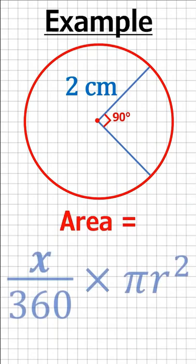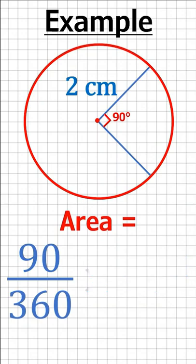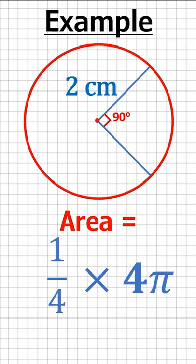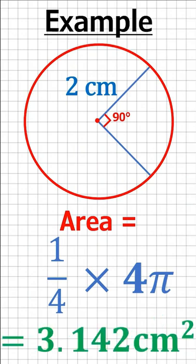Replace x with 90 degrees, and using 2 in pi r squared gives us 4 pi. 90 over 360 gives us a quarter, leaving us with the final answer of pi cm squared, or 3.142 cm squared in decimal.